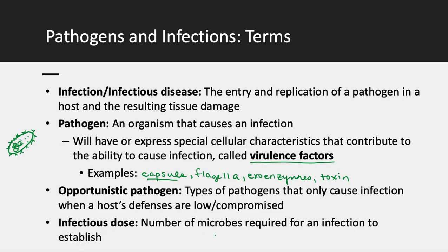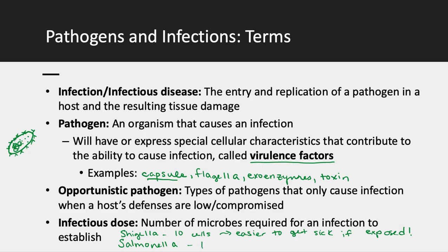Infectious dose refers to the number of microbes required to cause an infection. Shigella has an infectious dose of 10 to 100 cells — you only need a little bit to get really sick, making it quite dangerous. Salmonella, another GI tract pathogen, has an infectious dose of around 10 to the 6 cells, which is a million — a much larger dose, making it more difficult to get sick even if you're exposed.